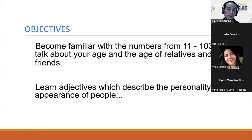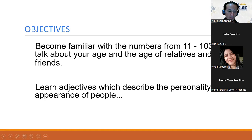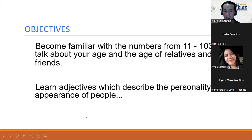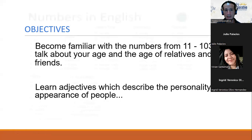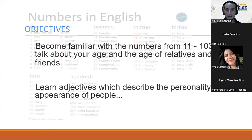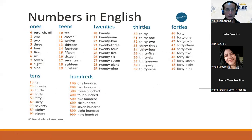We're going to talk about the numbers from eleven to one hundred three, and talk about your age and the age of relatives and friends. Vamos a hablar de nuestra edad y también de la edad de nuestros familiares y amigos. That will be objective number one. Objective number two: learn adjectives which describe the personality and appearance of people. Los adjetivos nos ayudan a describir la personalidad y la apariencia de las personas — esa es la función de un adjetivo.